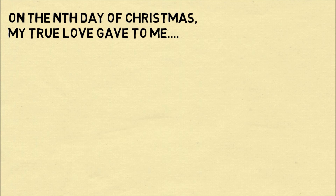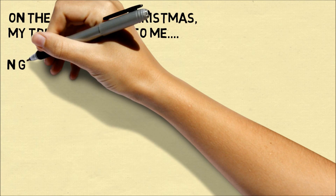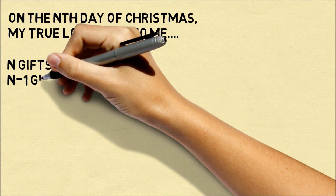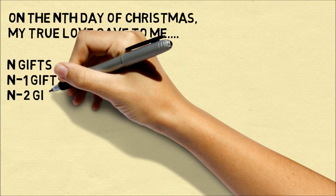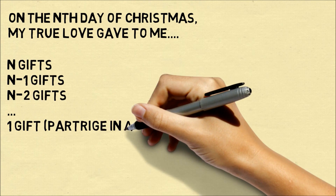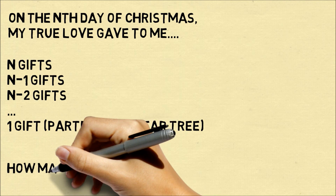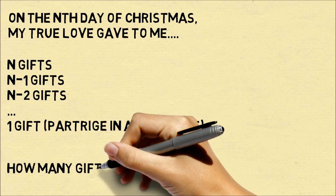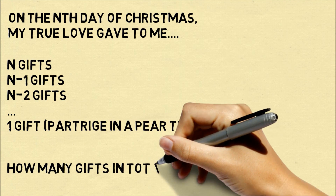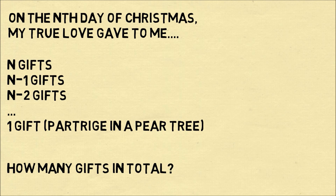The point of this song is that each day you get that many number of gifts, plus you get the number of gifts from every day before, all the way down to the partridge in a pear tree. So the question is: how many gifts do you get in total for the 12 days?